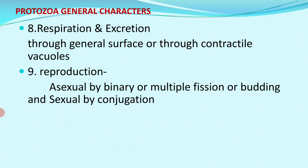Reproduction takes place in both ways — asexual and sexual. Asexual reproduction occurs by binary fission, where two organisms are formed from a single individual, or by multiple fission, where many organisms are formed, or by budding. Sexual reproduction involves conjugation of adults or fusion of gametes in some groups.